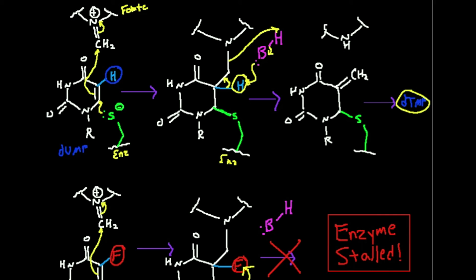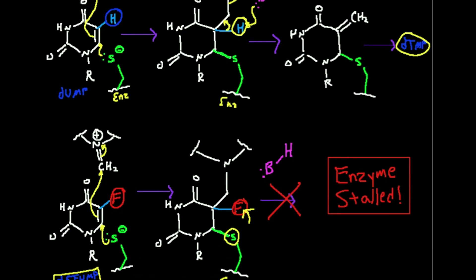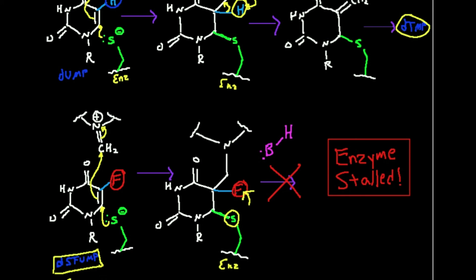Remember, this is a covalent type of inhibition — it's not reversible, it's irreversible. Hopefully seeing this gave you an idea of what a suicide inhibitor does. There's not really a whole lot to quantify here, but in the next few videos we are going to look at competitive, uncompetitive, and mixed inhibition, and we will quantify those. Make sure to like this video and subscribe to the channel for future videos and notifications.